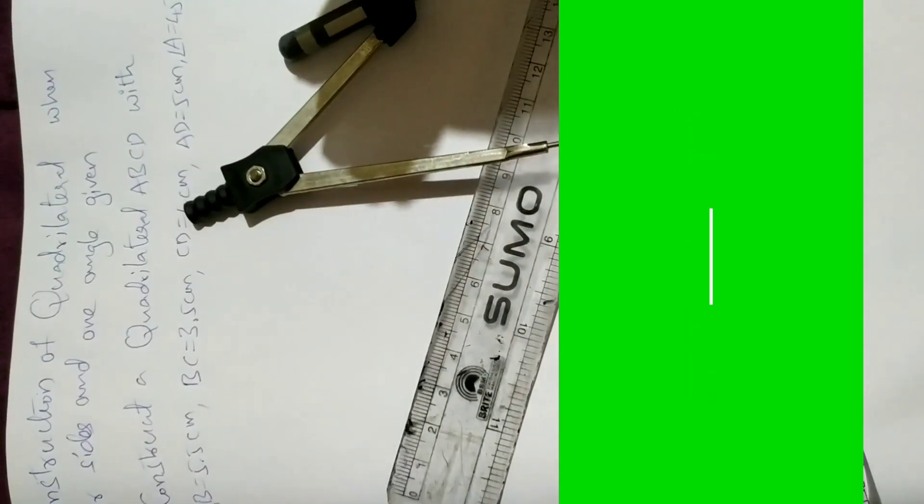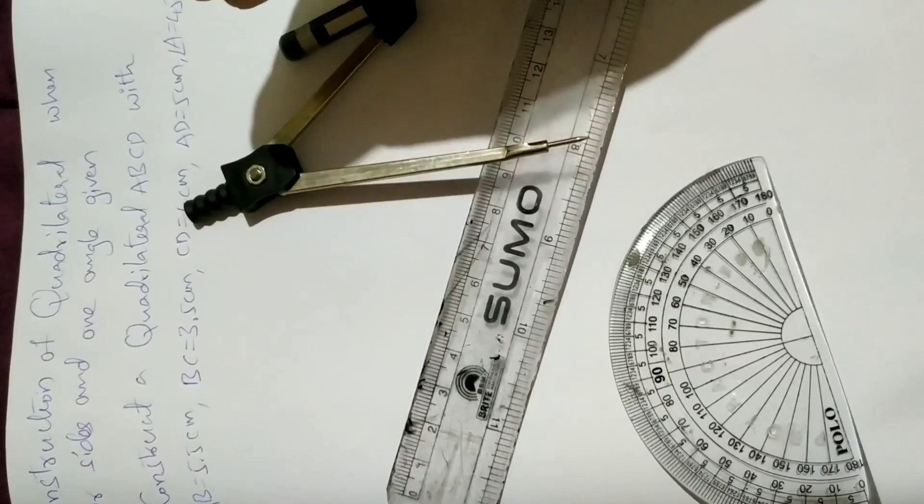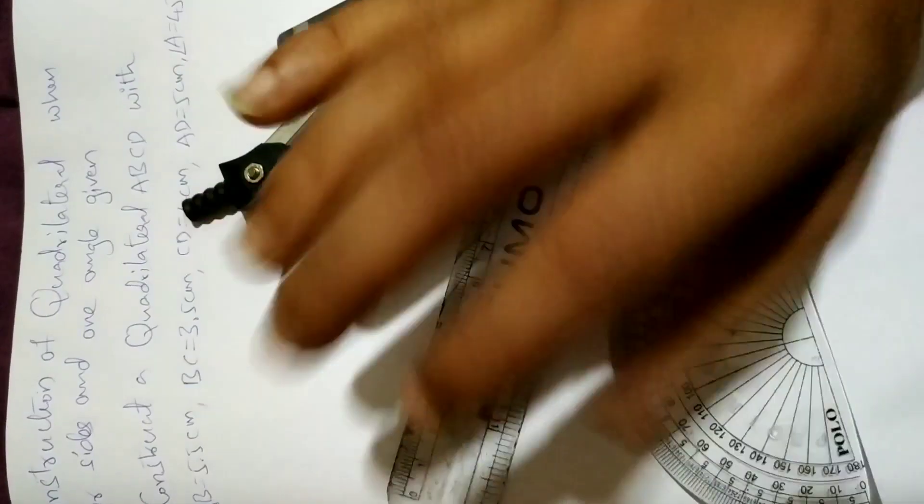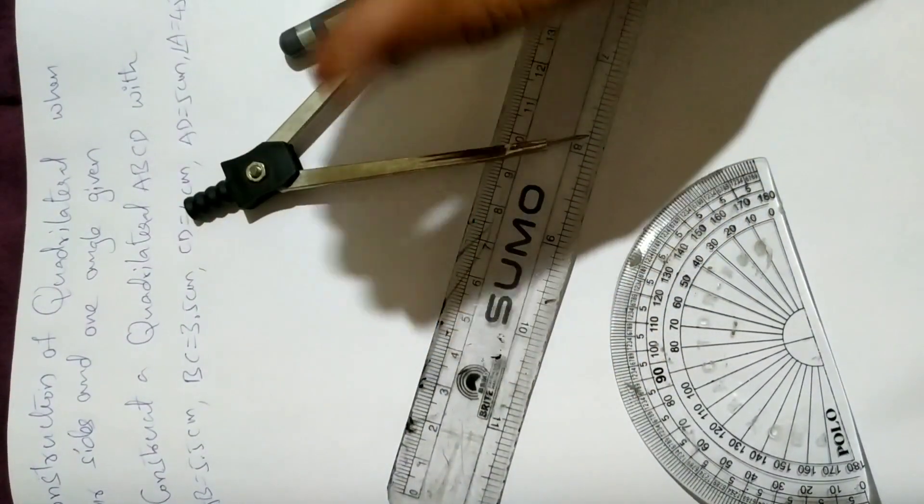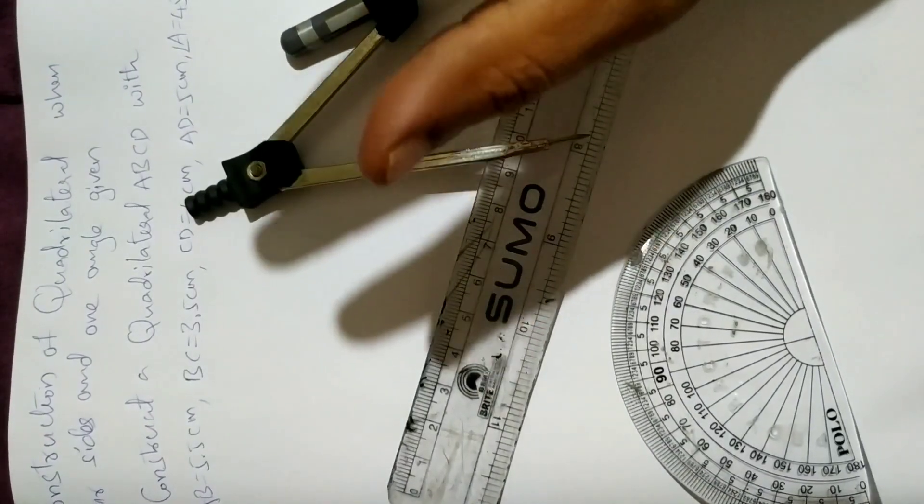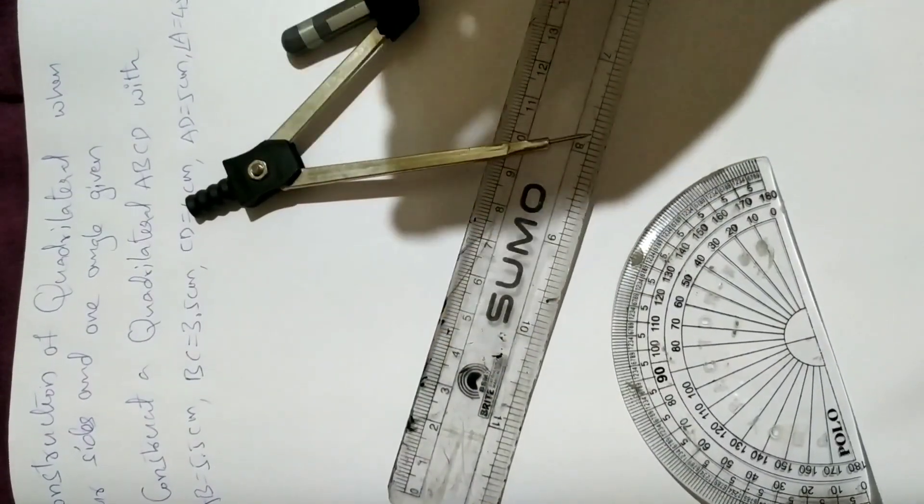To construct a quadrilateral, at least we need five measurements. Five or six measurements - it could be sides, angles, or diagonals. At least a combination of those measurements.